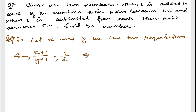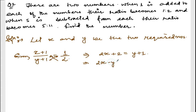To solve, cross multiply: multiply by 2 on the left and by 1 on the right. You get 2x + 2 = y + 1. Now transfer y to the left and 2 to the right: 2x minus y = 1 minus 2, which gives 2x - y = -1. This is equation number one.